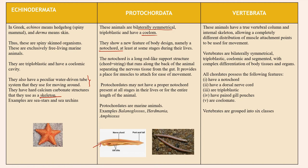The last family is Vertebrata. These animals have a true vertebral column and internal skeleton, allowing a completely different distribution of muscle attachment points for movement. Vertebrates are bilaterally symmetrical, triploblastic, coelomic, and segmented with complex differentiation of body tissues and organs. All chordates possess the following features: they have a notochord, dorsal nerve cord, are triploblastic, have paired gill pouches, and are coelomate.